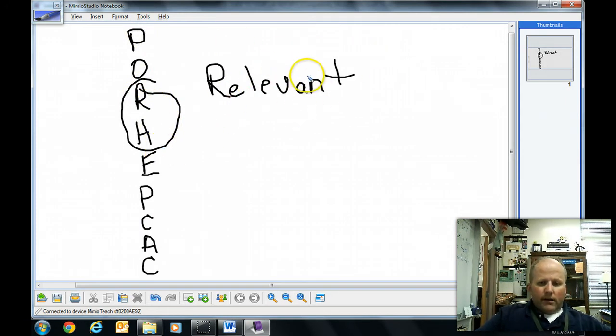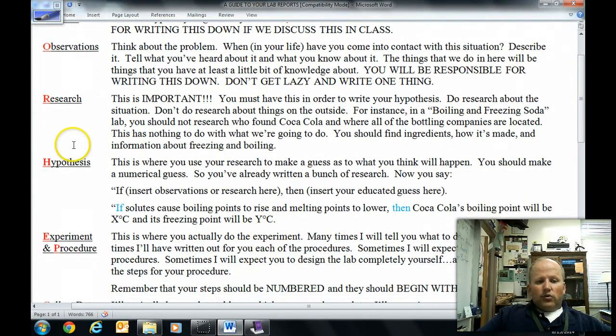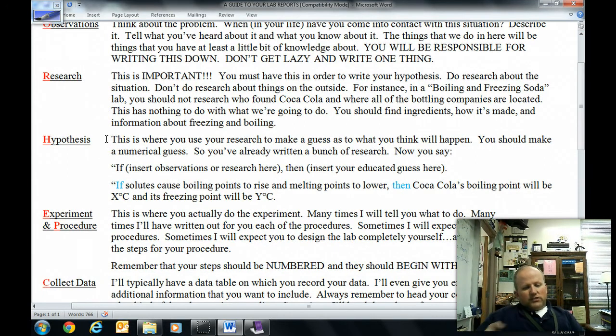But I already have a word written here that I did not mention about O that also is important about R. Observations and research both need to be relevant, meaning don't do an observation or don't do research that has nothing to do with the problem. An example is actually given about this in the research section of your handout. In it, it says research is important. You must have this in order to write a hypothesis. Do research about the situation. But don't research about things on the outside, meaning only research relevant topics about the problem.